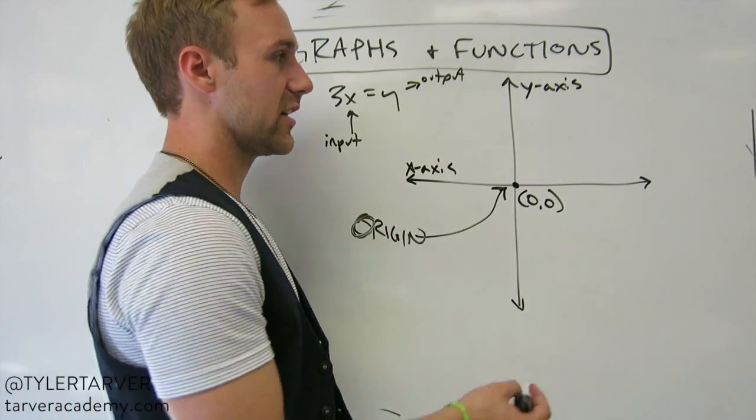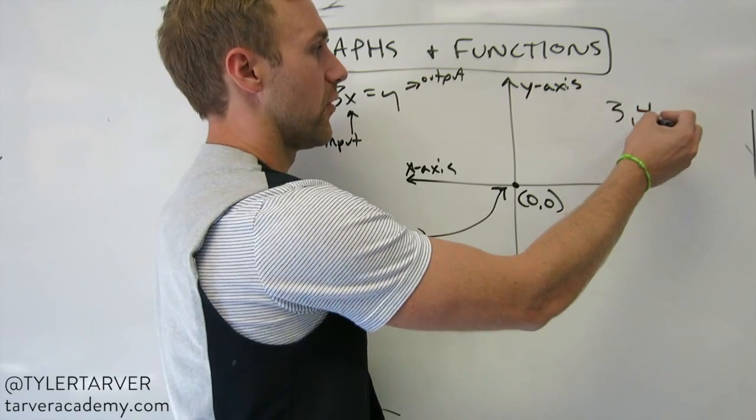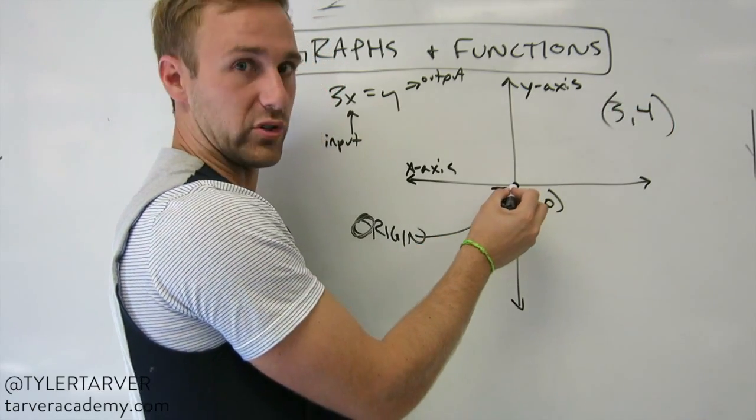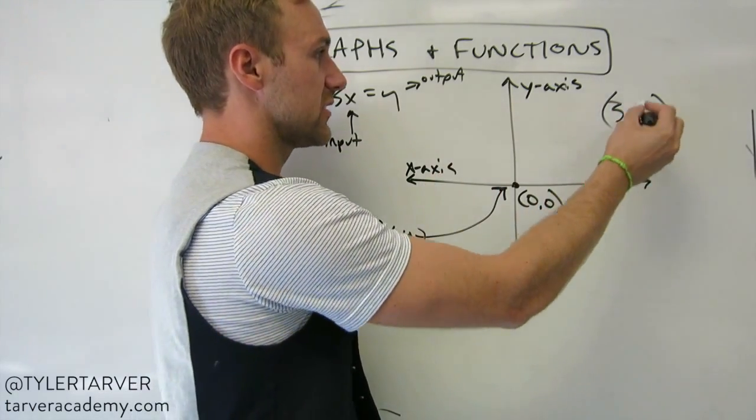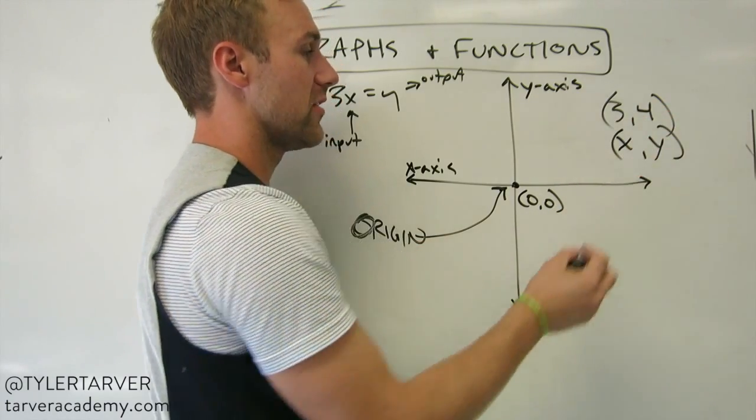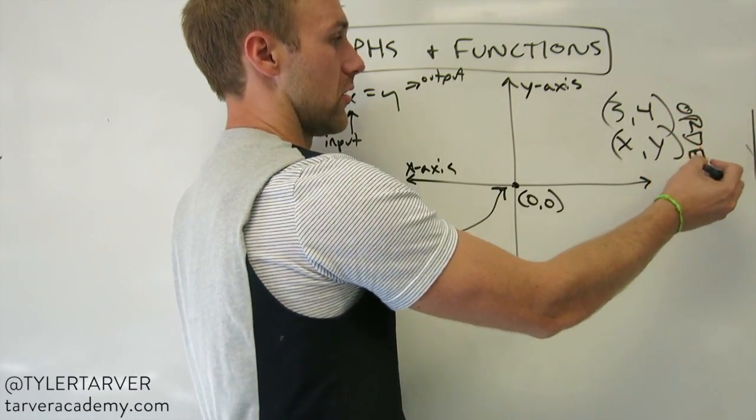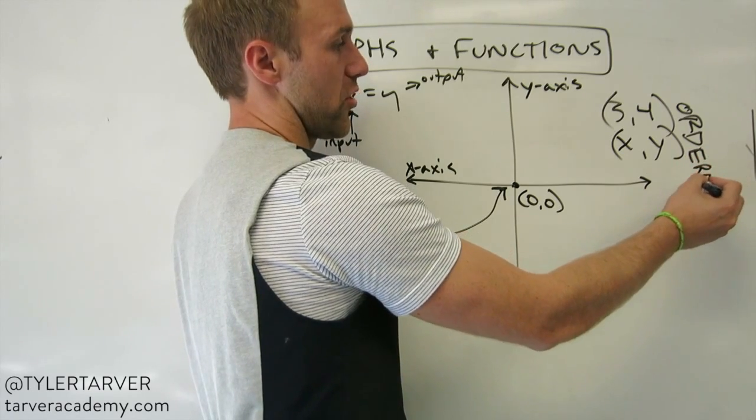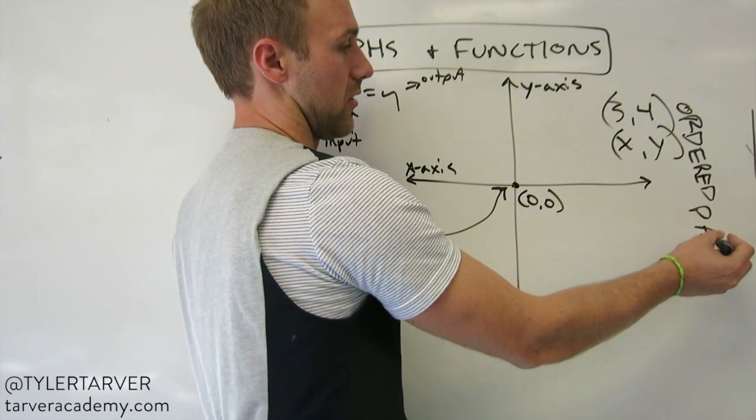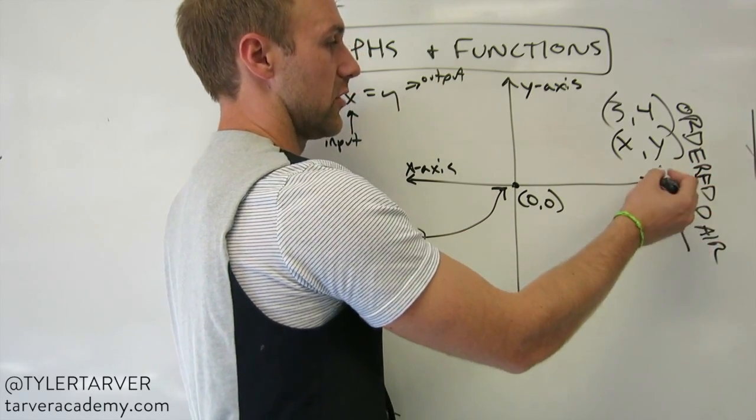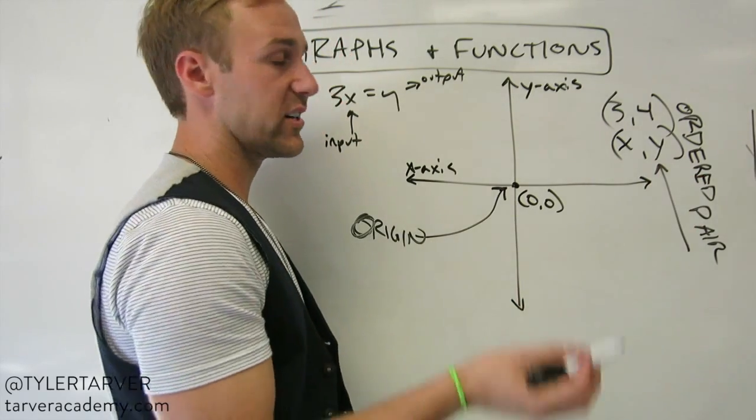Anytime you have a coordinate, say you've got 3, 4, you start at your origin and then you count. First one is your x, second one is your y. That is called an ordered pair. I don't know why I wrote it this way, but it's true. An ordered pair is an x and a y value, an input and an output.